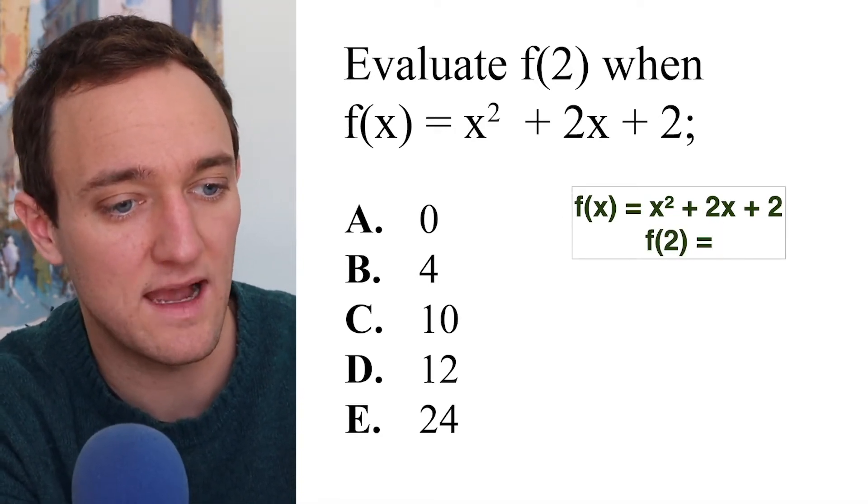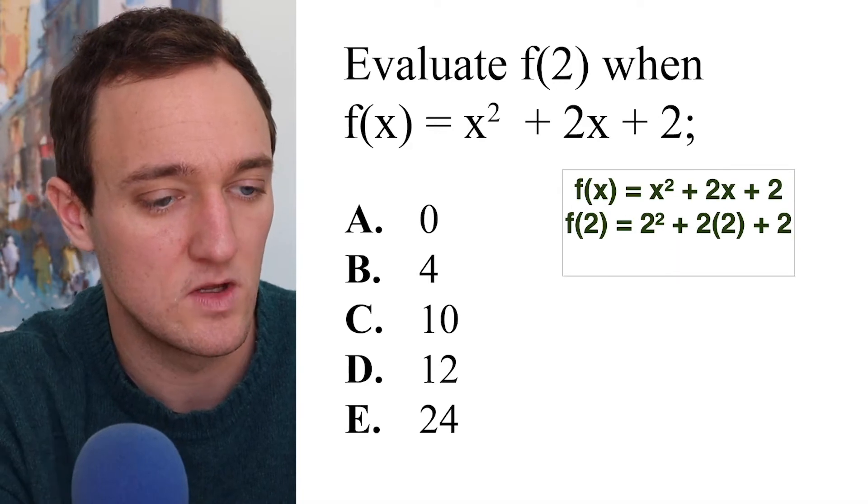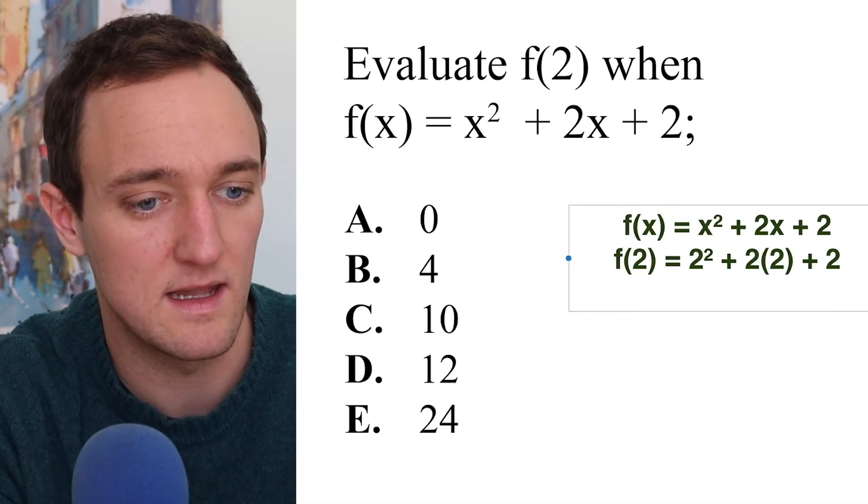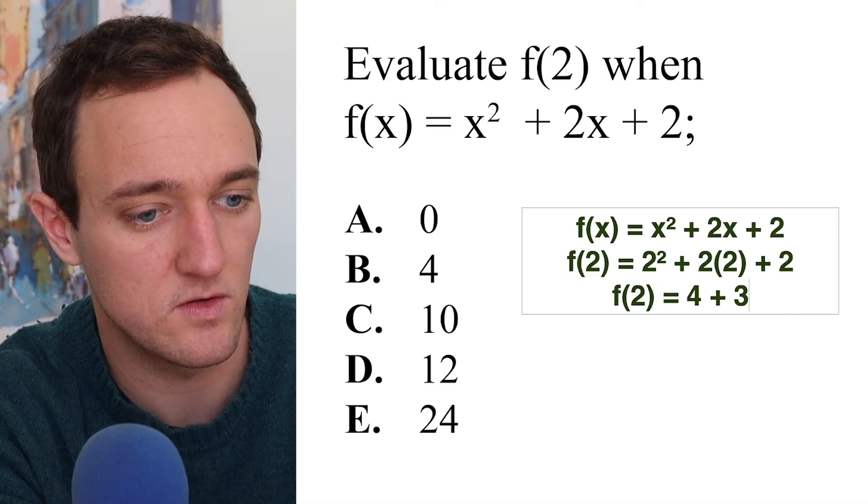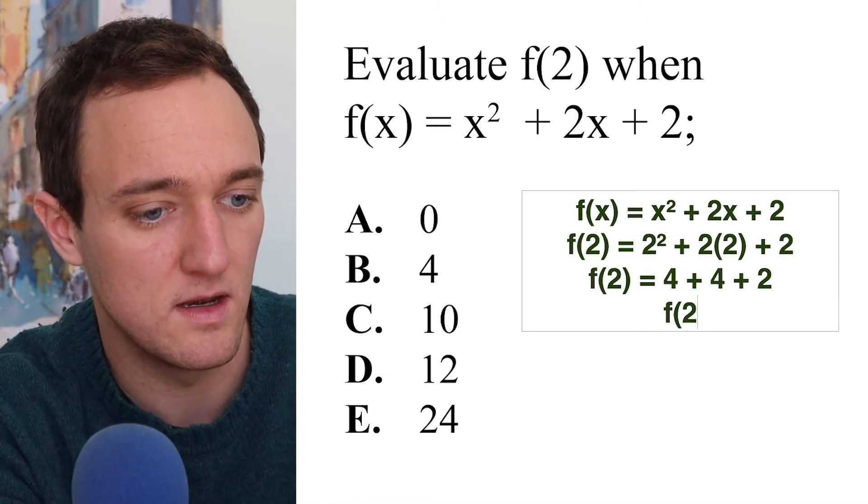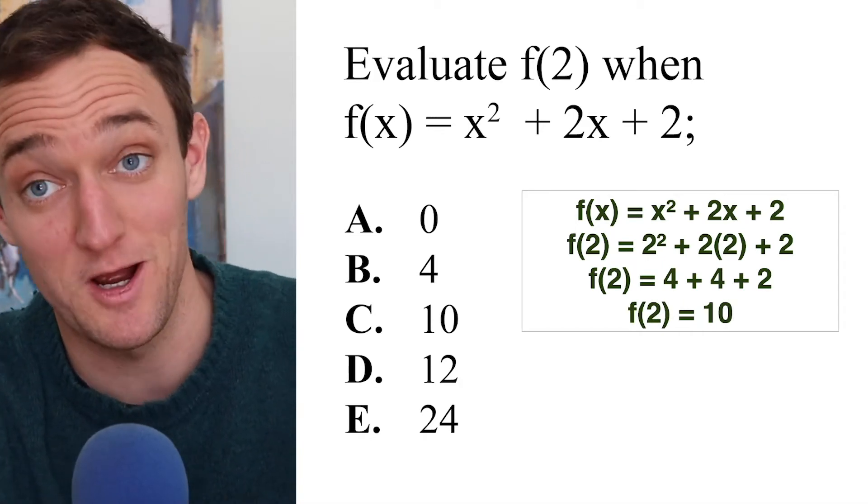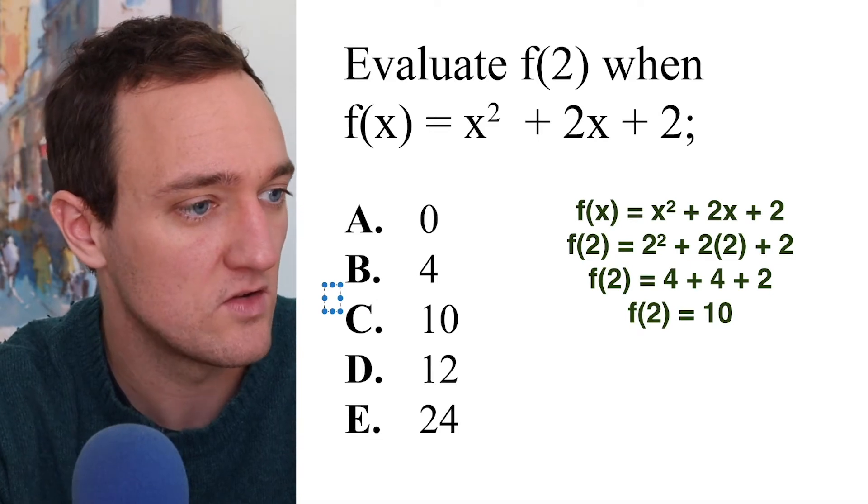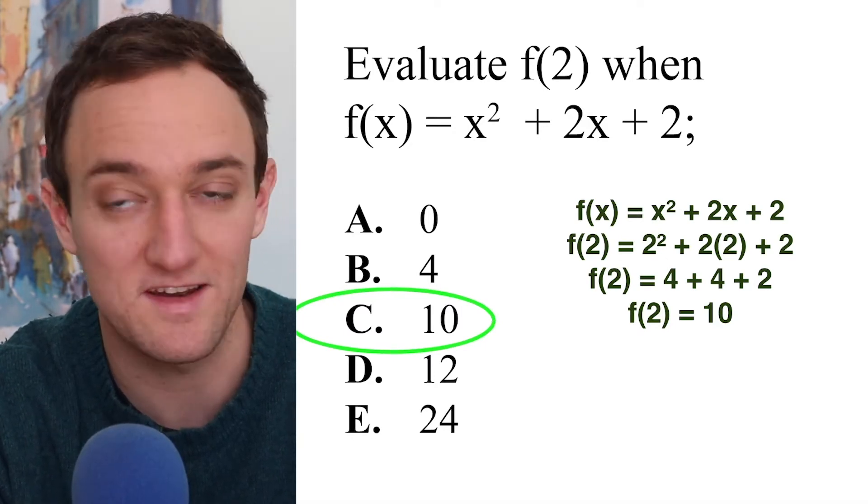Now, if we want to evaluate this function for a specific value, all we need to do is replace all of our x's with that specific value. So in this case, it's 2. We just have to say f(2) is going to be equal to 4, plus another 4 right there, and plus a 2. We add all that up. It's probably going to be 10. It's not just probably, I can tell you for sure it is 10 because I wrote this question. So there we go. We get our answer as 10 and we would circle C here.